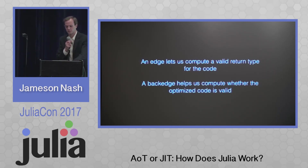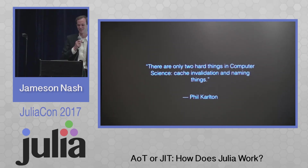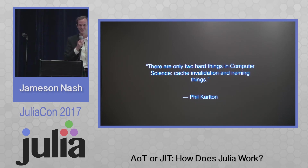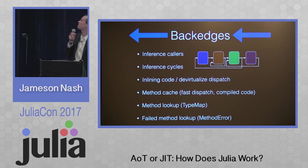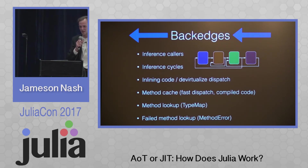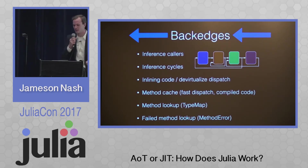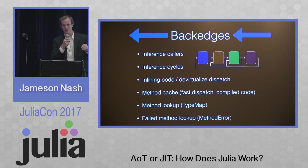A famous saying is that there are only two hard things in computer science: cache invalidation and naming things. It took us about six years since the release of the language to invalidate most caches correctly, so there seems to be some truth in that. There are quite a few different back edges we have to track. If you have a simple method that calls a second method, that's fairly straightforward. But if you have some crazy complicated cycle — as I represented with the squares and arrows up there — back edges become a little bit stranger to compute, because you have to figure out all the different ways to traverse arrows to reach functions and discover they're all interdependent.